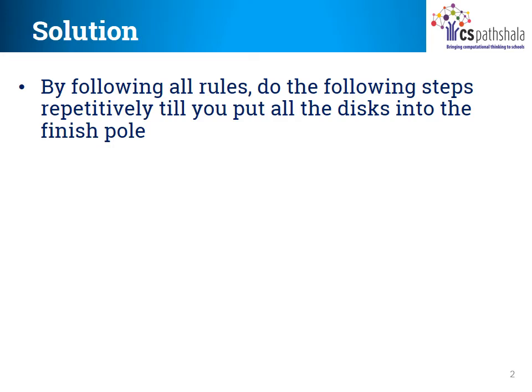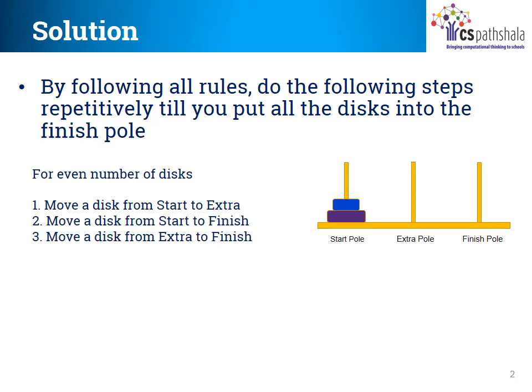When you have an even number of discs, for example 2, 4, 6, or 8, you have a different set of 3 actions than when you have an odd number of discs, for example 1, 3, 5, or 7. For even number of discs, the actions are: 1 - move a disc from start to extra pole; 2 - move a disc from start pole to finish pole; and 3 - move a disc from the extra pole to the finish pole. Do these 3 actions over and over again till you move all the discs from the start pole to the finish pole.